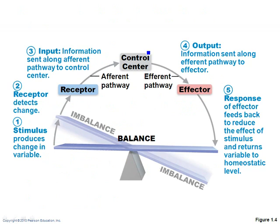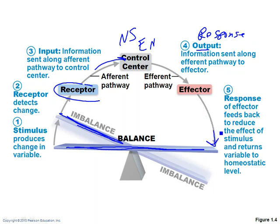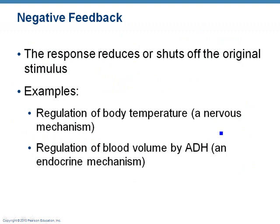Let's look at a schematic. This is where you want to be — in balance, in homeostasis. There's some kind of stimulus that causes you to get out of balance. Your receptor detects it and sends a signal to the control center — either the nervous system or the endocrine system. It then sends the output or response to the effector, which puts you back in balance. That happens in two ways: negative feedback or positive feedback. Negative feedback is when the response shuts off the original stimulus, and 99% of all homeostatic mechanisms work by negative feedback.